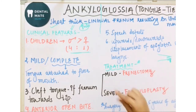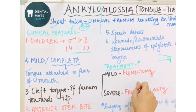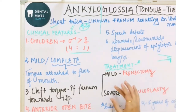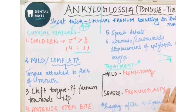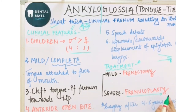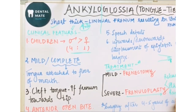Treatment depends on the type of case — mild or severe. If it is mild, a frenectomy is performed, which involves simple release of the frenum. If the case is severe with functional deformities, a frenuloplasty is performed. In frenuloplasty, there is both release and plastic repair of the frenum — not just release alone.